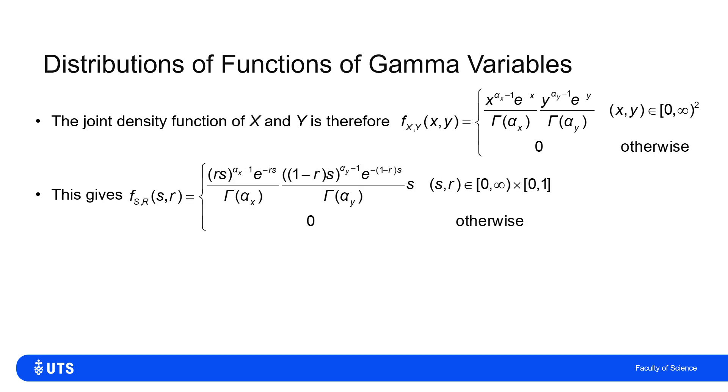Now what I've done here is I've replaced all of my X's with RS's. I've replaced all of my Y's with 1 minus R times S, and then I've multiplied by another S at the end, which is the absolute value of the determinant of the Jacobian.